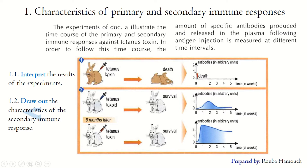For the interpretation: the rabbit injected with tetanus toxin dies and there is an absence of antibody secretion in its serum. This indicates that tetanus toxin is fatal — it causes the death of the animal.